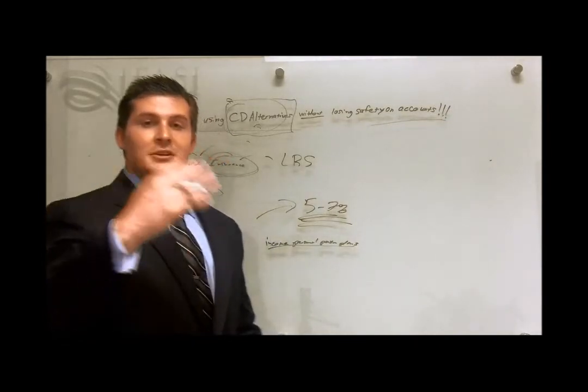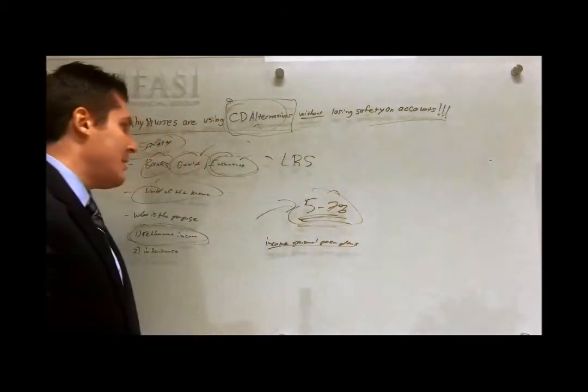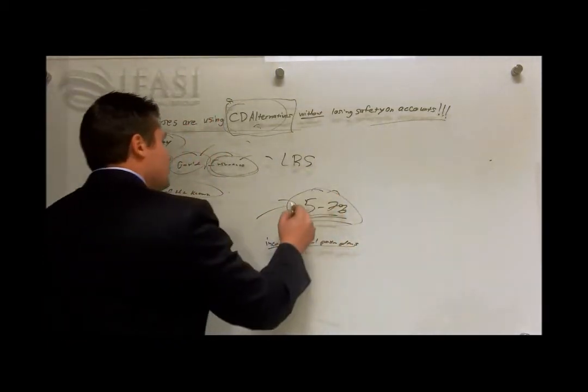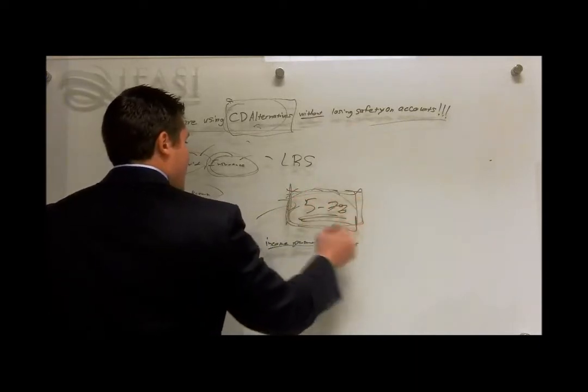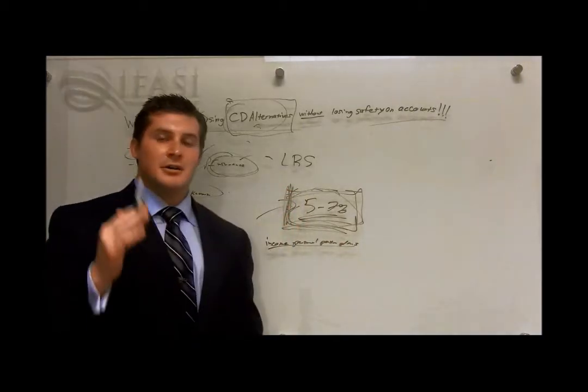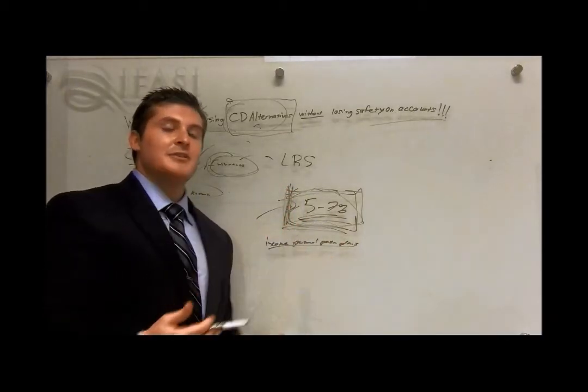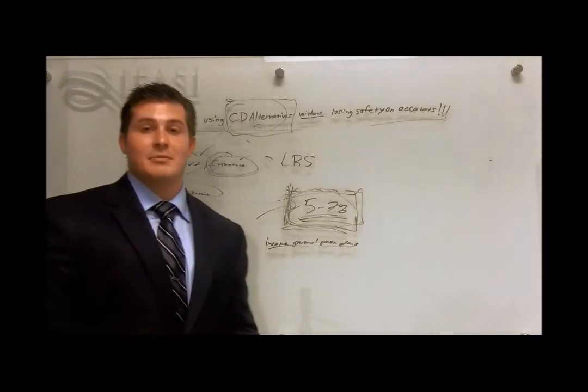Now, when you want to start taking those income distributions, you could, depending upon your age, you could take 5% to 7% out. You have that legal reserve system backing, and it's actually contractually guaranteed in your contract that you cannot outlive your money regardless of what happens to the account value.